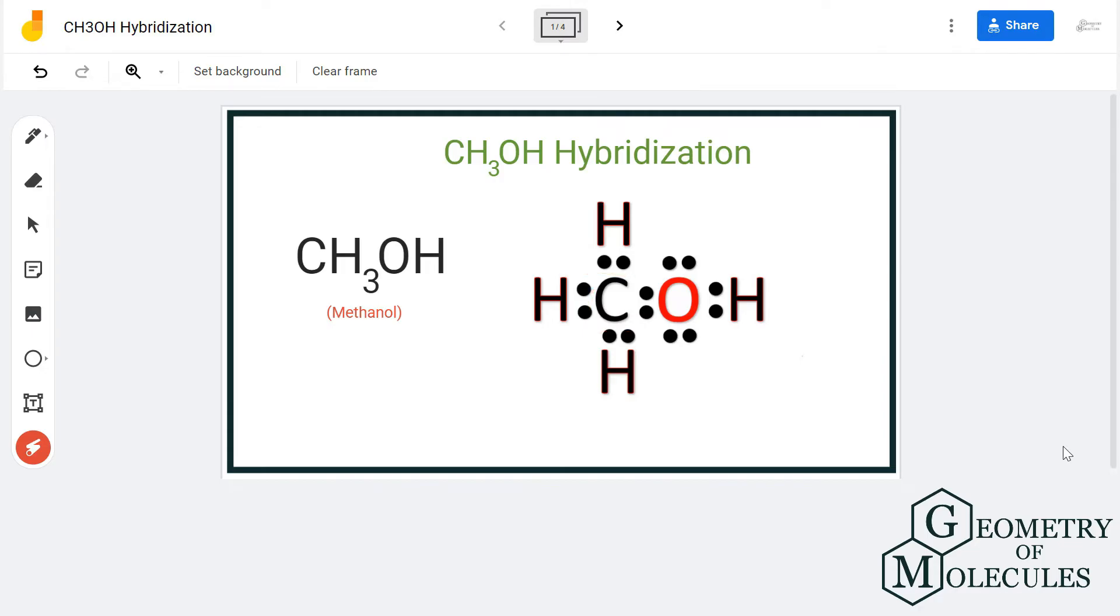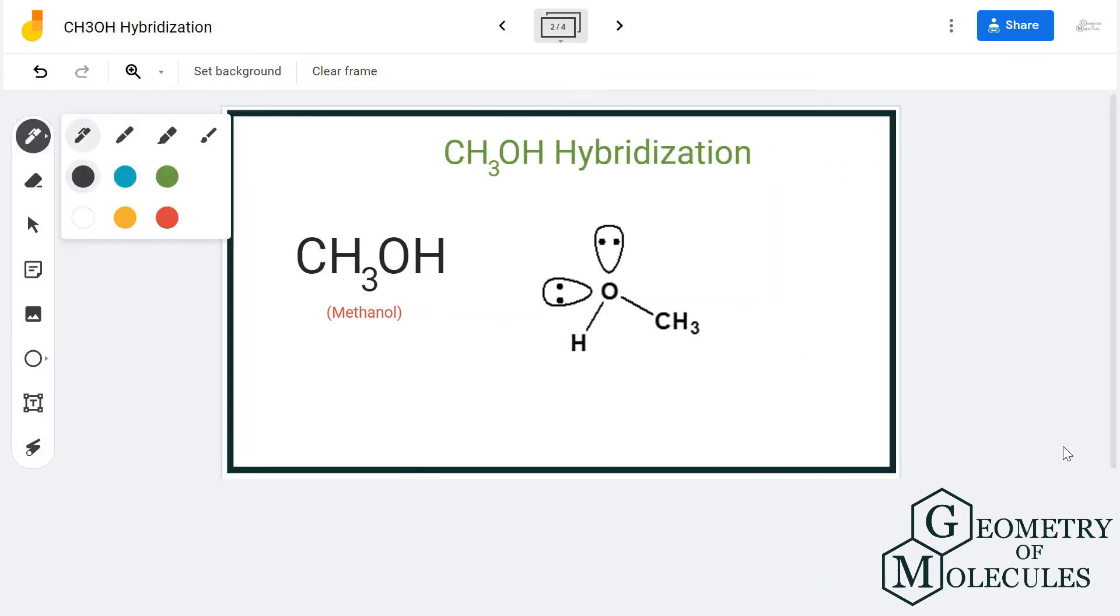As you can see here, carbon is forming three single bonds with hydrogen and one bond with the OH group. It needs to have four hybrid orbitals, which will also become the steric number.